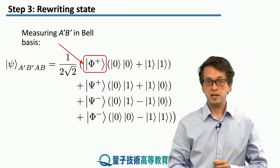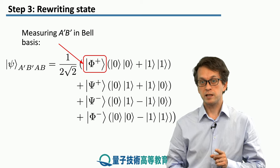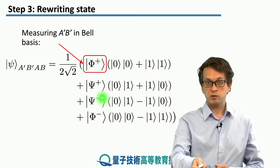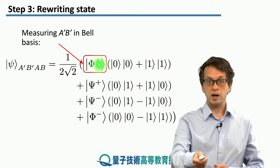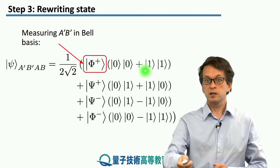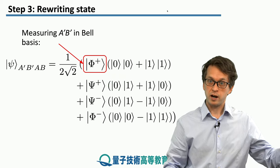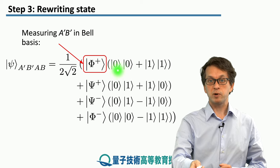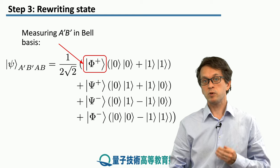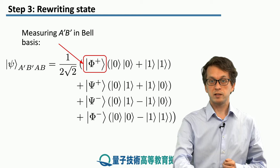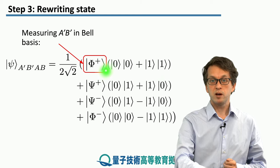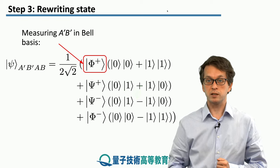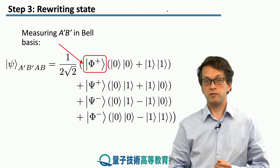We can now clearly see that if we measure qubits A' and B' at station 1 in the Bell state basis and obtain the result corresponding to phi-plus, we project qubits A and B — held at station 0 and station 2 — into the maximally entangled Bell state phi-plus, i.e., |00⟩ + |11⟩. Similarly, we have the possibility of obtaining the other three Bell states at A' and B': psi-plus, psi-minus, or phi-minus, and correspondingly the state of A and B will be in the same Bell state.